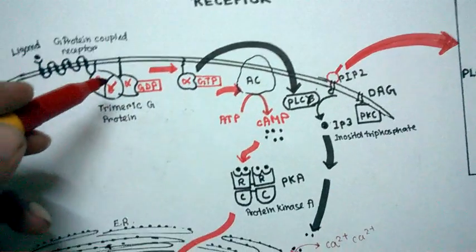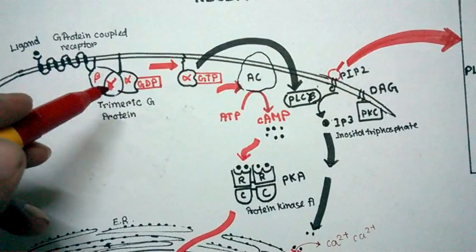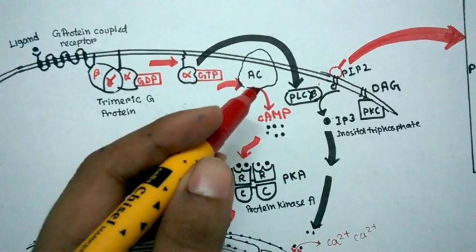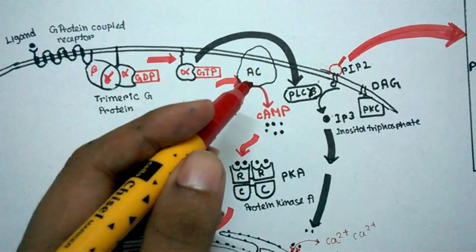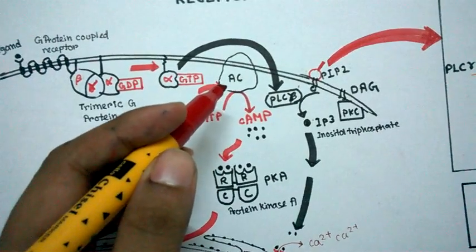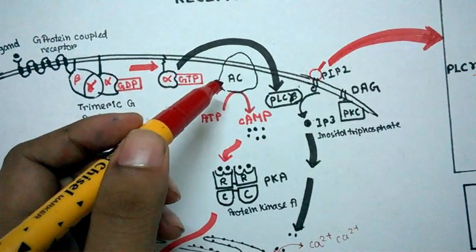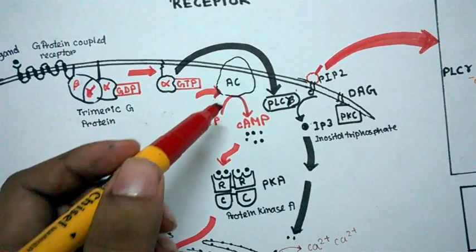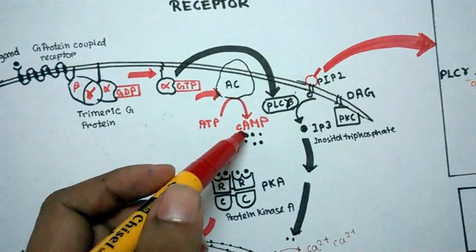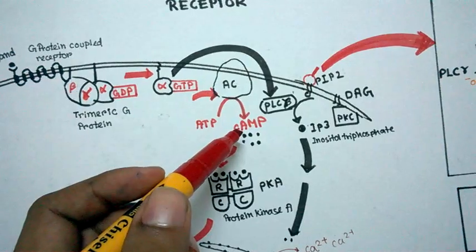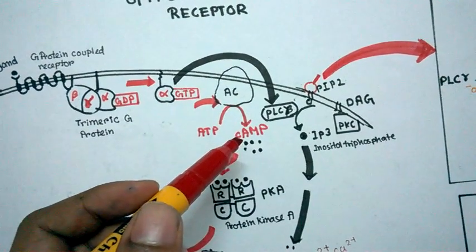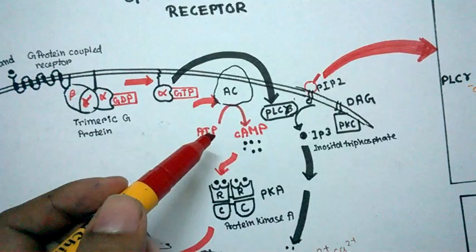The alpha subunit can go and activate adenylate cyclase enzyme. This adenylate cyclase enzyme performs the conversion of ATP to cyclic AMP. Cyclic AMP is a very important second messenger.